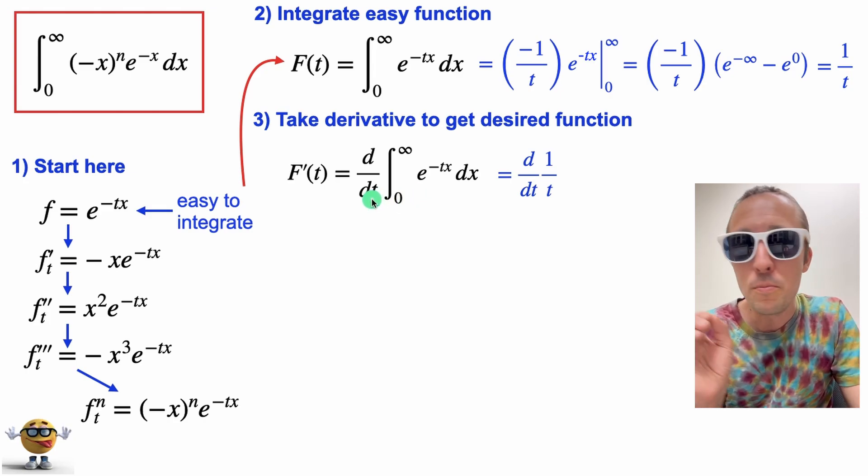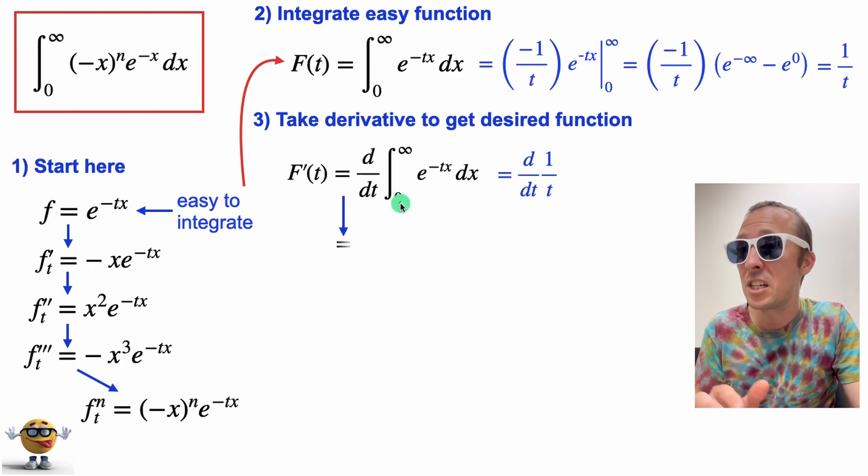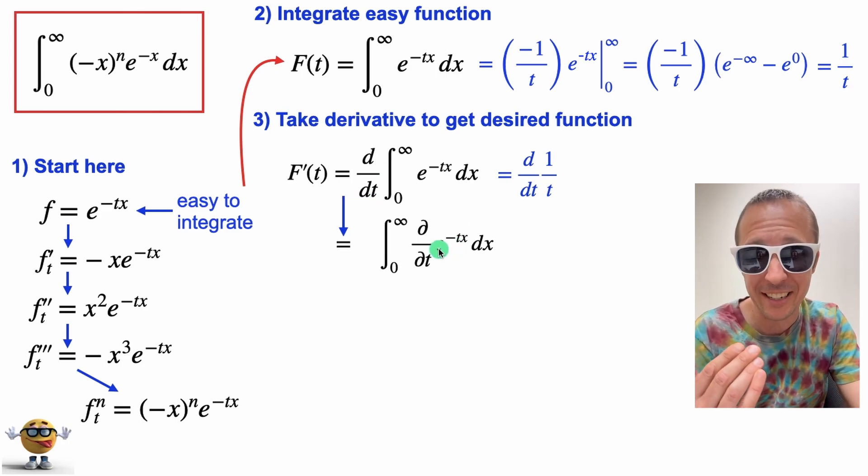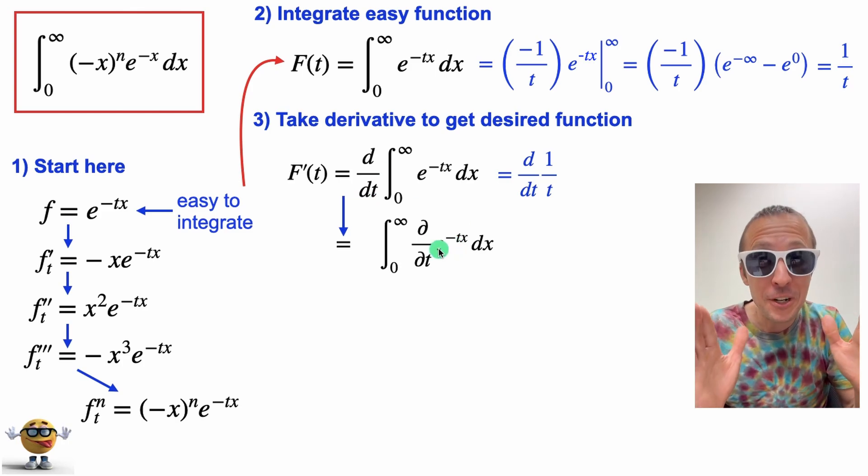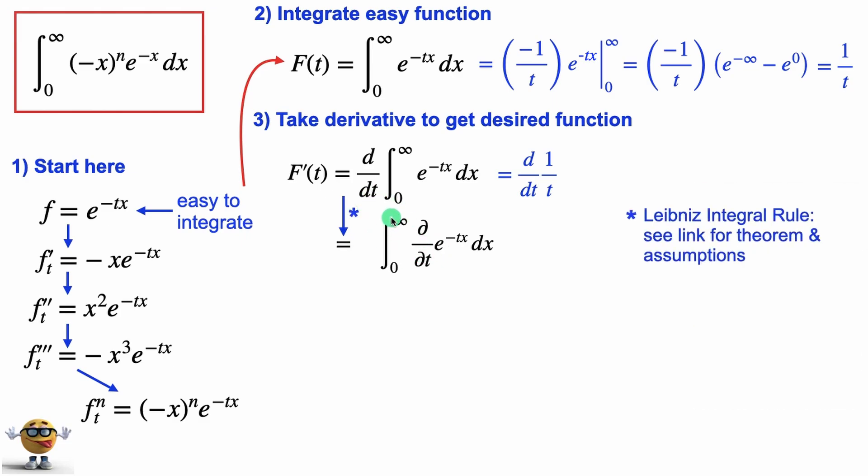Now, you might not have seen this before. We're taking the derivative of an integral. What we can do is just simply pass this derivative inside the integral sign. There's a few conditions that's required in order to do this, so you can't always pass it in. There's something called like a dominating function that we need to ensure.